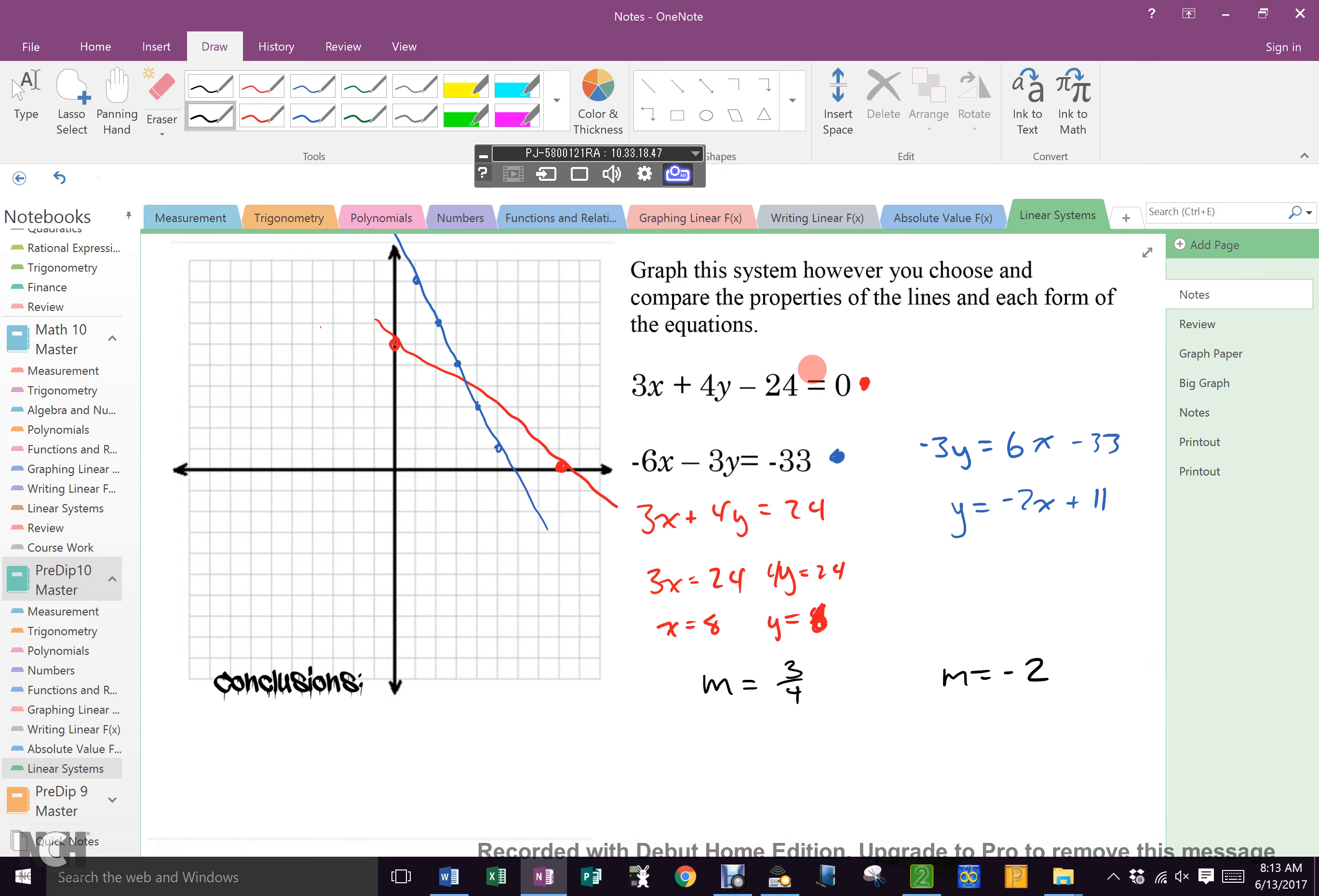Please notice there is no right or wrong answer. All you have to do is tell me something about this system. So there is no need for everybody to be scared to talk because you can't get it wrong. Go. Excellent. They have an intersection. So there is a solution. How many solutions? One. There is a solution because they intersect.